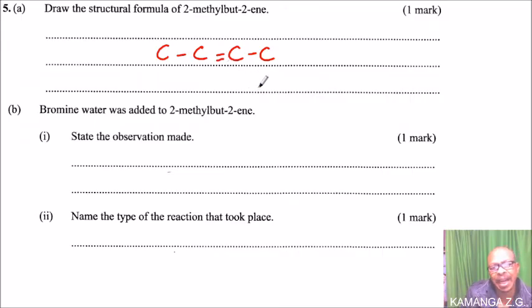The double bond goes between the second and third carbon. From there, this is where we have the methyl group on the second carbon, so we have another carbon there. Then we fill up the other bonds with hydrogen atoms.